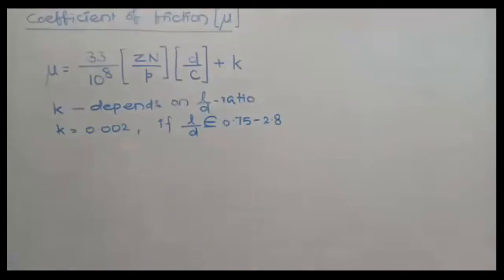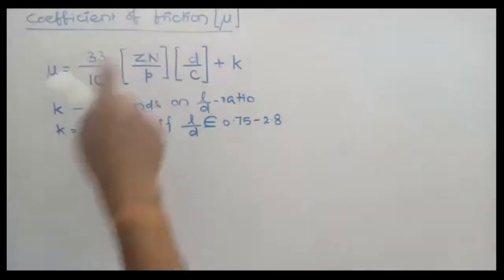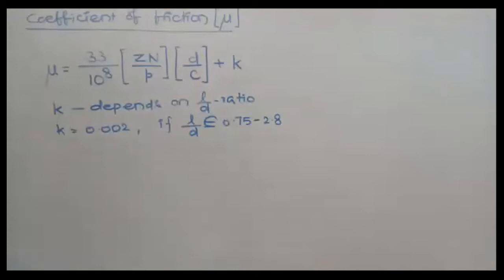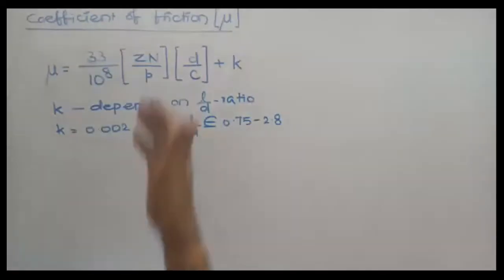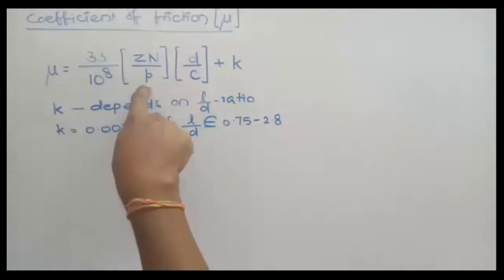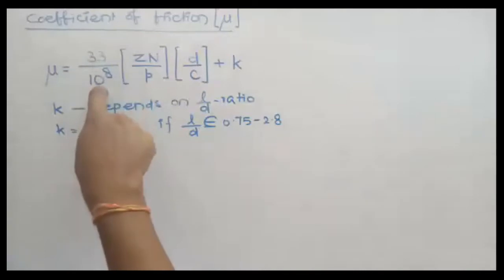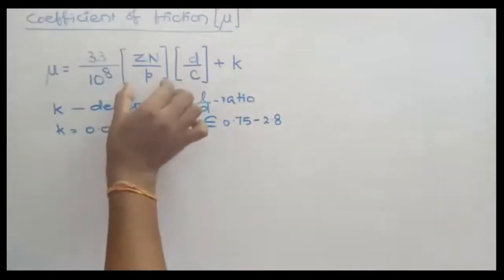Units are very important here. If viscosity Z is in SI units (kg/m·s or N·s/m²) and bearing pressure P is in N/mm², you use the constant 33 × 10⁸. If CGS units are used — such as N·s/cm² for viscosity and N/cm² for pressure — the constant becomes 33 × 10¹⁰. Both equations are available in the data book. The operating values of ZN/P and d/c are calculated from the given data.